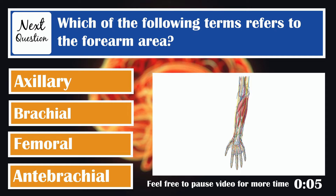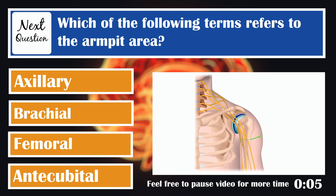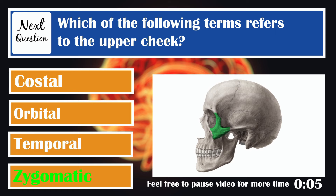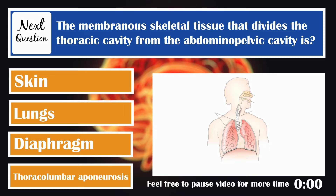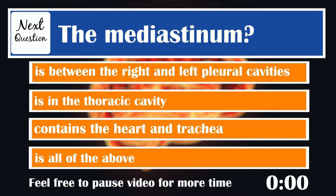Which of the following terms refers to the armpit area? Axillary. Which of the following terms refers to the upper cheek? Zygomatic. The membranous skeletal tissue that divides the thoracic cavity from the abdominal pelvic cavity is the diaphragm. The mediastinum is between the right and left pleural cavities, is in the thoracic cavity, and contains the heart and trachea — so it is all of the above.